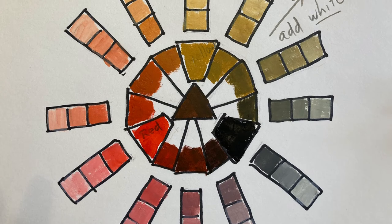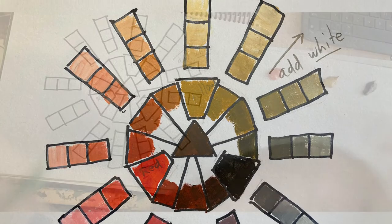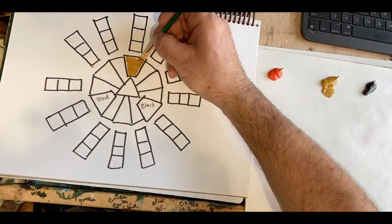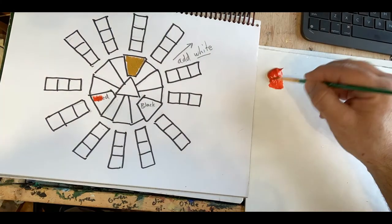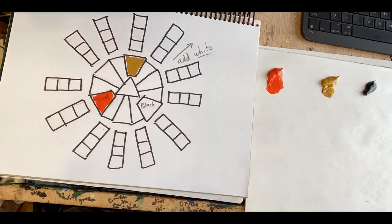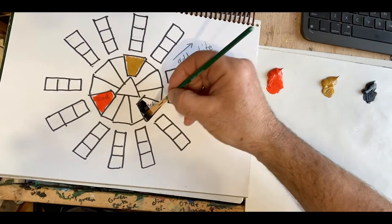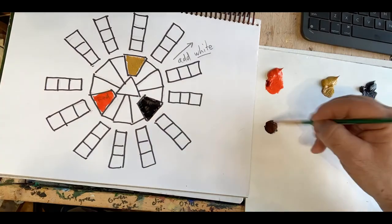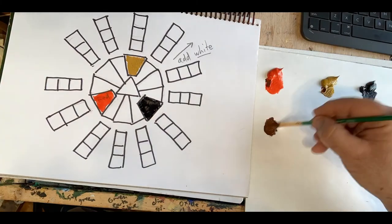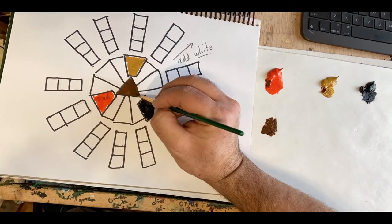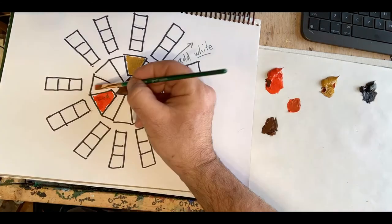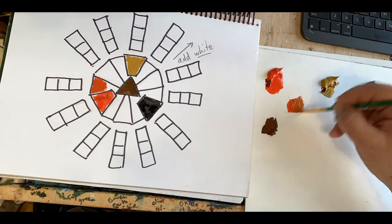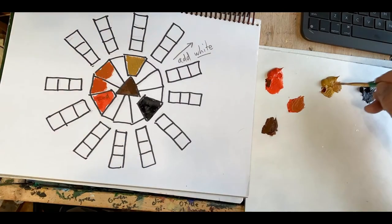This is what your Zorn color chart should look like when you're finished. I start with the three basic colors in the three triangles. In the very middle, I mix all three colors together. And then in between the triangles, I do gradients mixing colors from one end to the other. And then to the outside in the little squares, I'll add white to get lighter tints from those different colors.